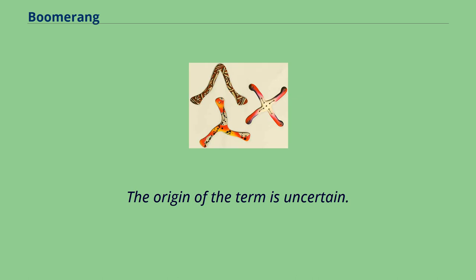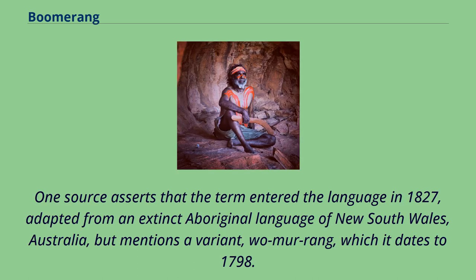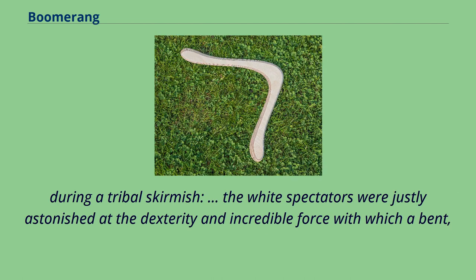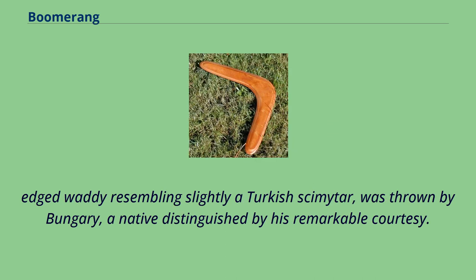The origin of the term boomerang is uncertain. One source asserts that the term entered the language in 1827, adapted from an extinct Aboriginal language of New South Wales, Australia, but mentions a variant dated to 1798. The first recorded encounter with a boomerang by Europeans was at Farm Cove in December 1804, when a weapon was witnessed during a tribal skirmish. White spectators were astonished at the dexterity and incredible force with which a bent, edged wadi resembling slightly a Turkish scimitar was thrown by Bungary, a native distinguished by his remarkable courtesy.